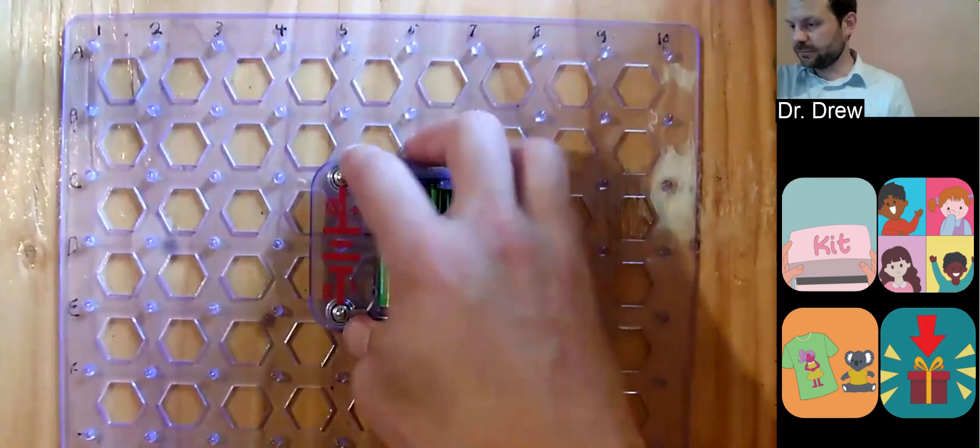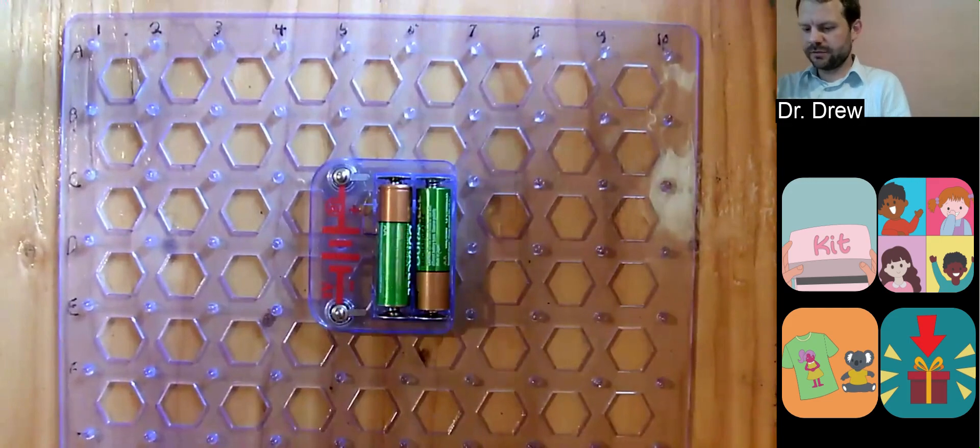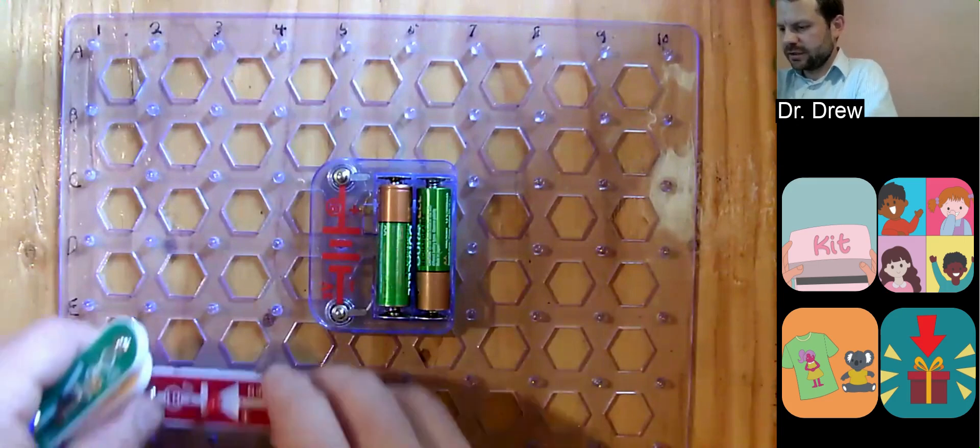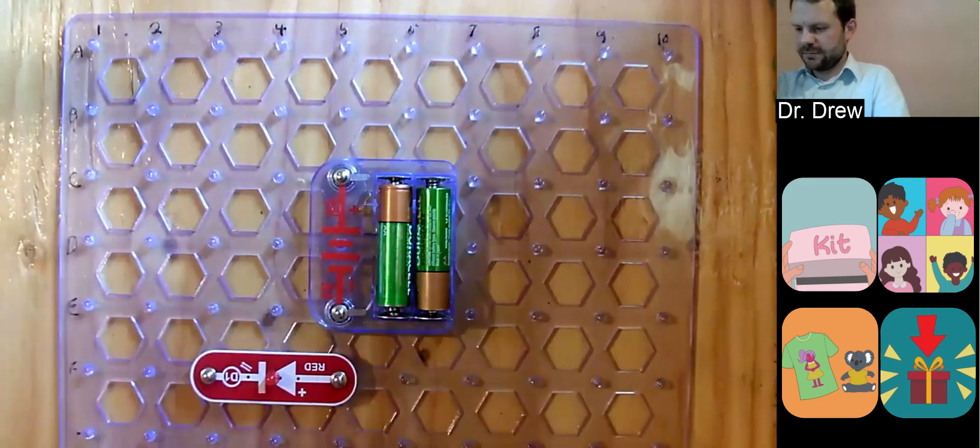First, we're going to set the battery pack right in the middle to give us enough space on about C5. We'll put our LED down here, our light emitting diode.